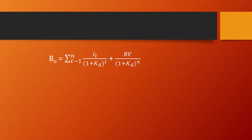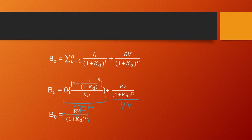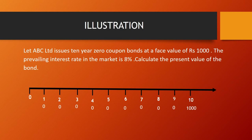We can apply the ordinary annuity formula. Since I is zero, anything multiplied by zero is zero, so that entire annuity portion becomes zero. The answer simplifies to: PVB = Redemption Value / (1 + KD)ⁿ. So in the case of a zero coupon bond, our formula becomes: Redemption Value (or maturity value) divided by (1 + KD) raised to the power n.